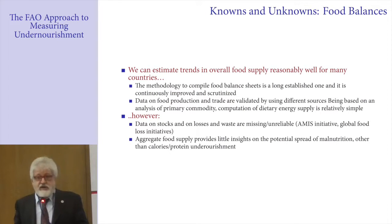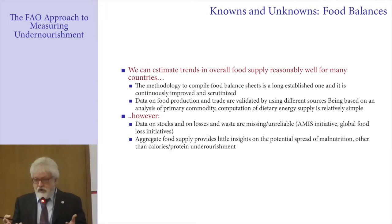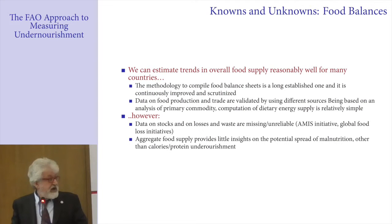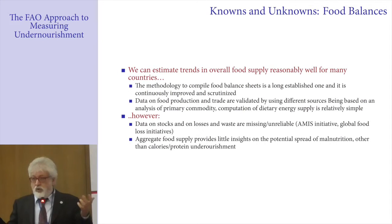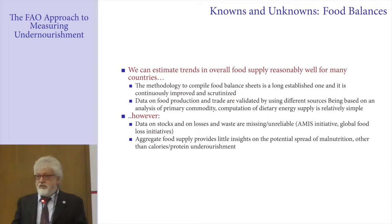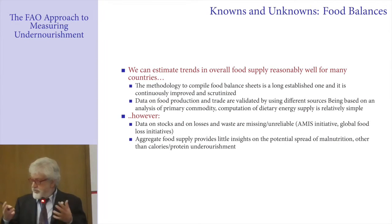There are problems with the extent of food waste and food losses, but I think there are ways in which the supply utilization account can, if informed by people with knowledge of the food system in a country, be done quite reliably. The remaining problem is that aggregated food supply doesn't give insights on the potential spread of various forms of malnutrition — the classic statistical issue that if we eat one chicken per capita, some people eat two and some eat none. Without information on the distribution of aggregate supply, nutritional implications are difficult to address.